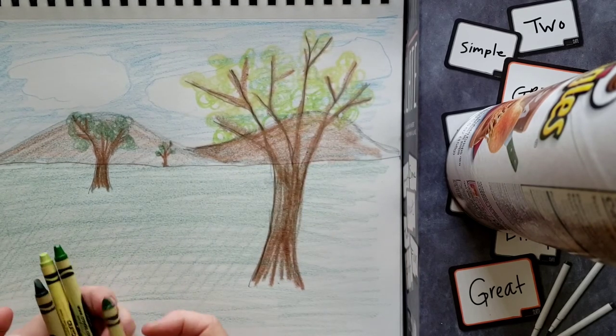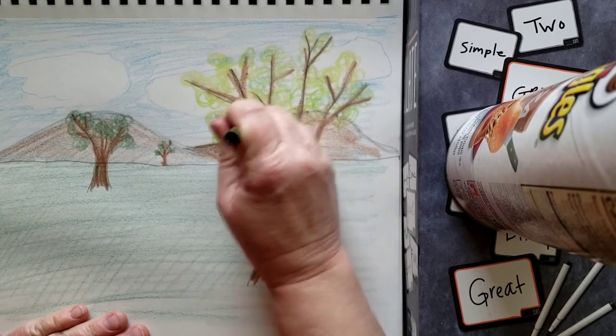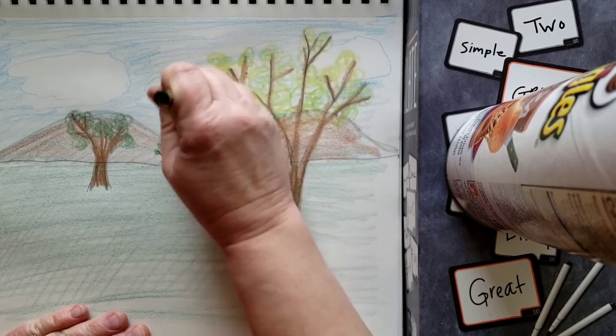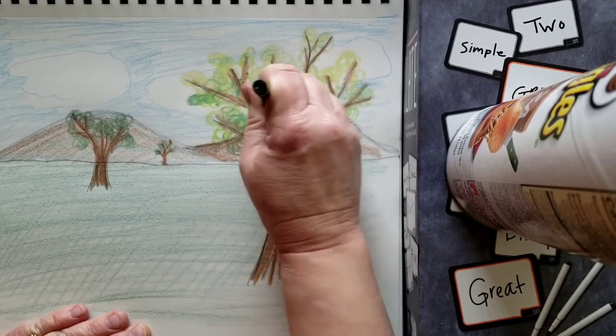And then a really dark green. Let me see what this one says. Forest green. And I'm coming in, putting in some more leaves. All right.